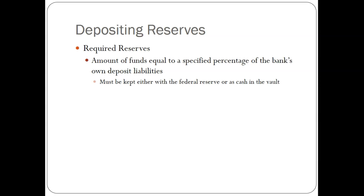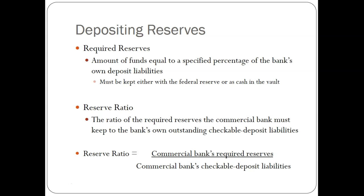This is where reserve requirements play a role. The required reserve is the amount equal to a specified percentage of the bank's deposit liabilities — only liabilities. This percentage must be kept as cash in reserve on the bank's asset side at all times. The reserve ratio is the commercial bank's required reserves divided by the bank's total checkable deposit liabilities. Net worth is excluded — only liabilities count.